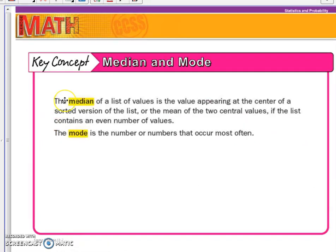So again, when you organize a list of data from least to greatest, the central value is the median. Now if you have an even number of values, you have to find the mean of the middle two values. The mode is very easy. That's just the number that occurs the most often.